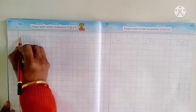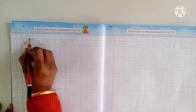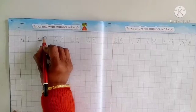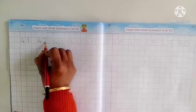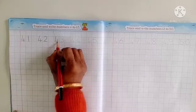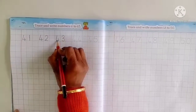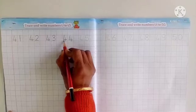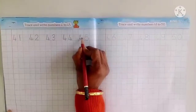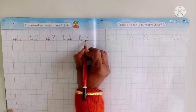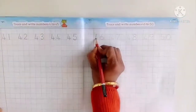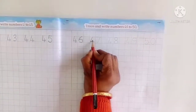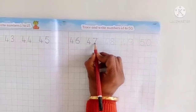Let's start. Four tens and one ones — forty-one. Four tens and two ones — forty-two. Four tens and three ones — forty-three. Four tens and four ones — forty-four. Four tens and five ones — forty-five. Four tens and six ones — forty-six. Four tens and seven ones — forty-seven.